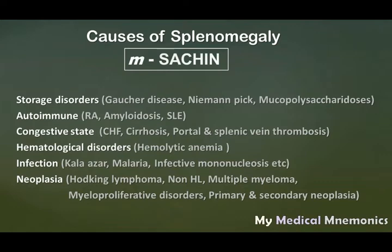The mnemonic SACHIN stands for: S for storage disorders, A for autoimmune disorders, C for congestive causes, H for hematological disorders, I for infections, and N for neoplasia. First, storage disorders — which include Gaucher disease, Niemann-Pick disease, mucopolysaccharidosis, and also amyloidosis — these storage disorders will cause splenomegaly.